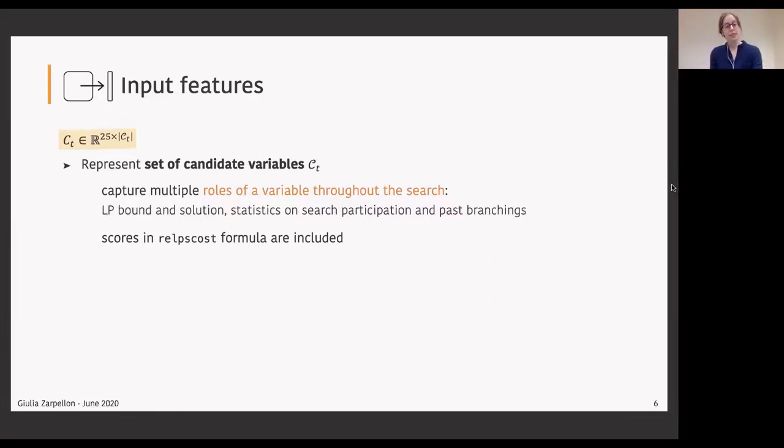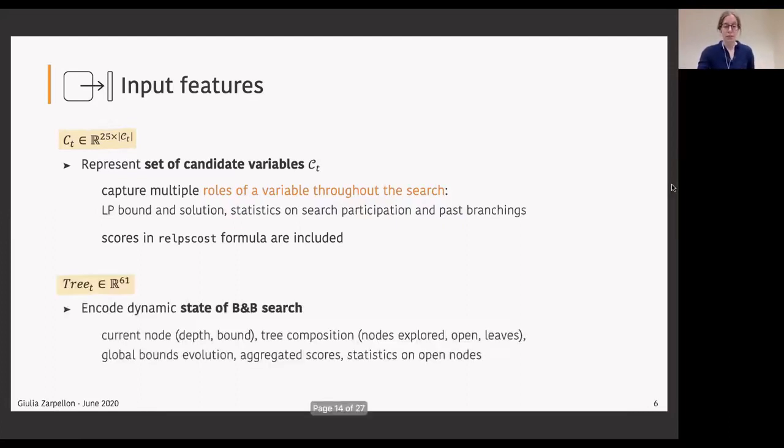We then have a separate additional representation, a different input, 3T, which is a vector in which we encode the dynamic state of the branch and bound search. In there we record information not only about the local node we are at, so the depth and the bound of it, but more general information about the tree composition in terms of how many nodes are explored, how many are still open, how many were pruned, how the global bounds are evolving, aggregated scores on the variable, and statistics on the list of open nodes, so in the frontier. For example, how the bound estimates are distributed in the list of open nodes.